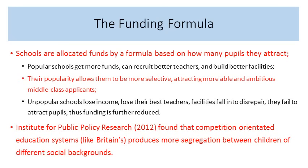In terms of the funding formula, schools are allocated funds based on how many pupils they attract. Popular schools get more funds; as a result they can recruit better teachers and build better facilities. Their popularity allows them to be more selective, attracting more able and ambitious middle-class applicants. Unpopular schools lose income, lose their best teachers, facilities fall into disrepair, and they fail to attract pupils, reducing funding further. This creates two self-fulfilling prophecies — one of success and one of failure. The Institute for Public Policy Research found that competition-orientated education systems, like Britain's, produce more segregation between children of different social backgrounds.